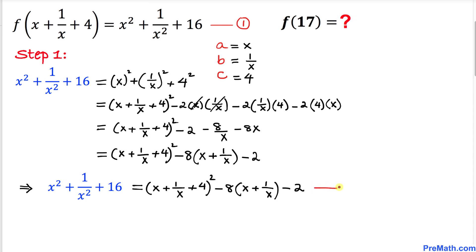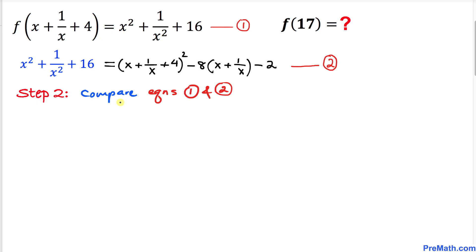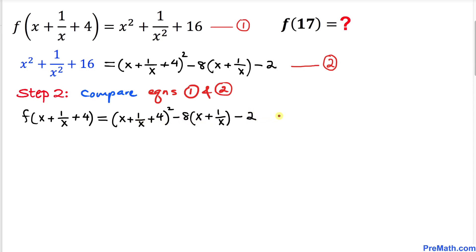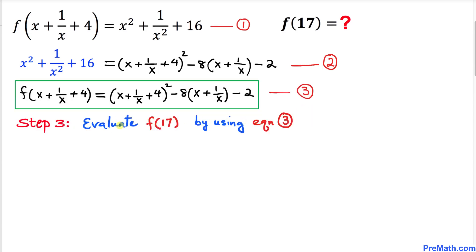Now let's compare equations 1 and 2. Using the transitive rule — if a = b and b = c, then a = c — we can write: f(x + 1/x + 4) = (x + 1/x + 4)² − 8·(x + 1/x) − 2. Let's call this equation number 3.